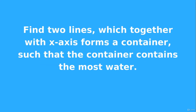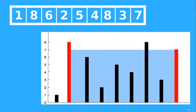What we're asked to do is find two buildings or two lines that can contain the most water. Here we have an input array represented by this graph, where each line has a y-axis value corresponding to the array element. Each line starts from the floor where y equals zero and goes up to the corresponding value — for example, the first building goes to y equals 1, and the second to y equals 8.